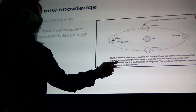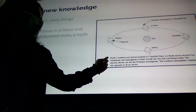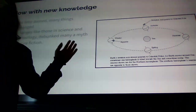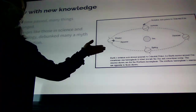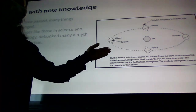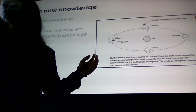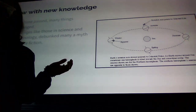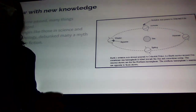Earth's rotation axis always points to celestial poles. As Earth moves around the sun, sometimes one hemisphere is tilted toward the sun and sometimes away. The seasons are shown here for the northern hemisphere, and the southern hemisphere seasons are the opposite. It's a lot less complex, if you think about it, than this guy who only gets to see his wife so much.